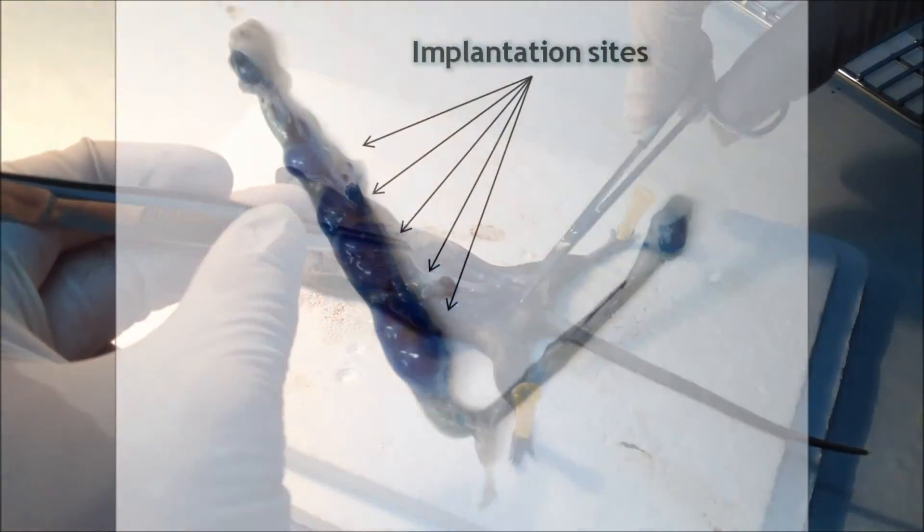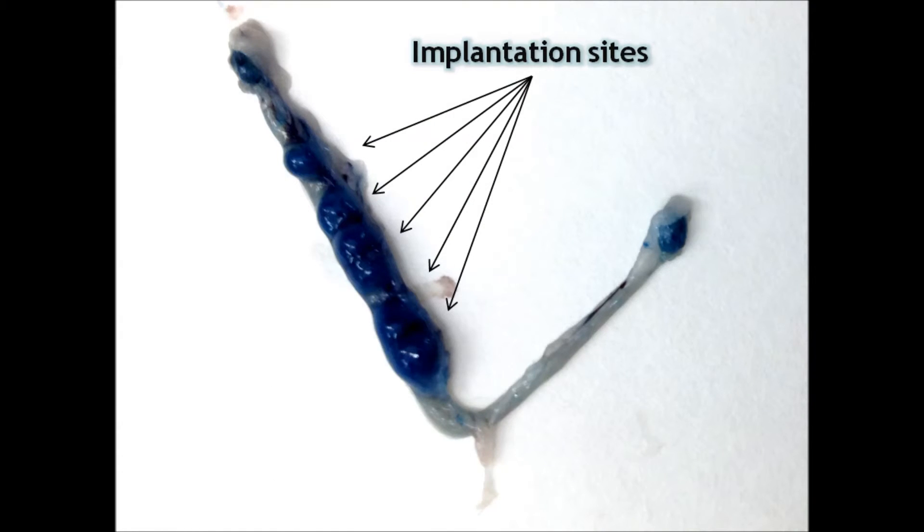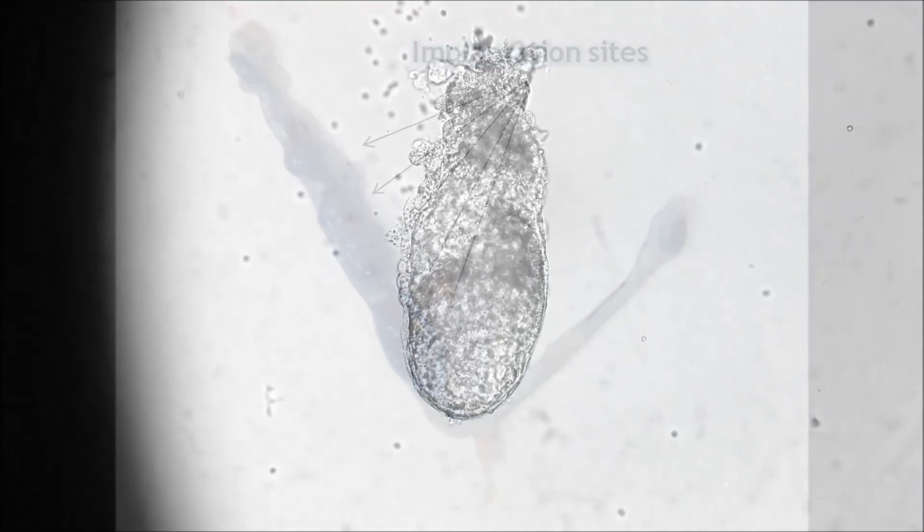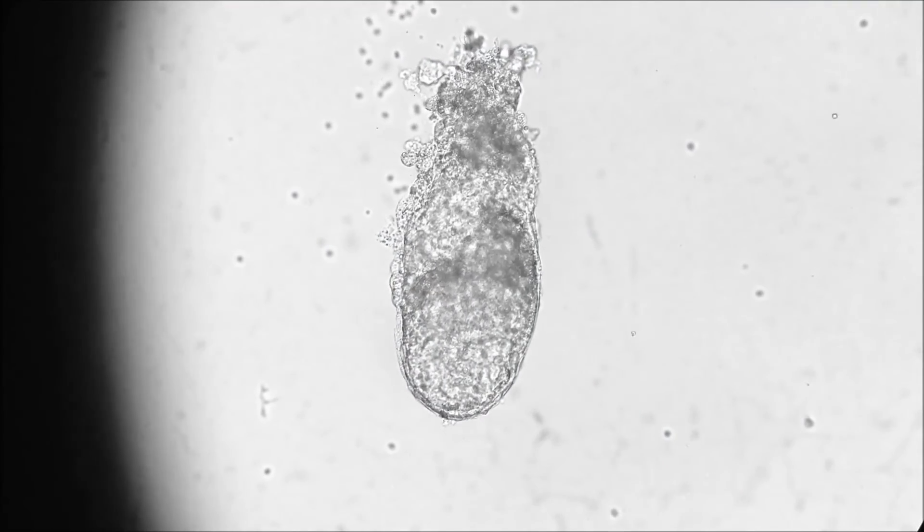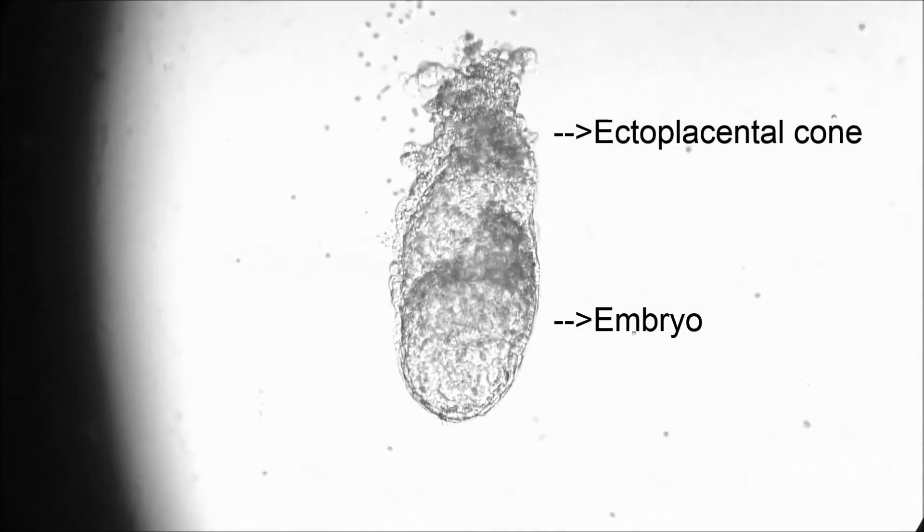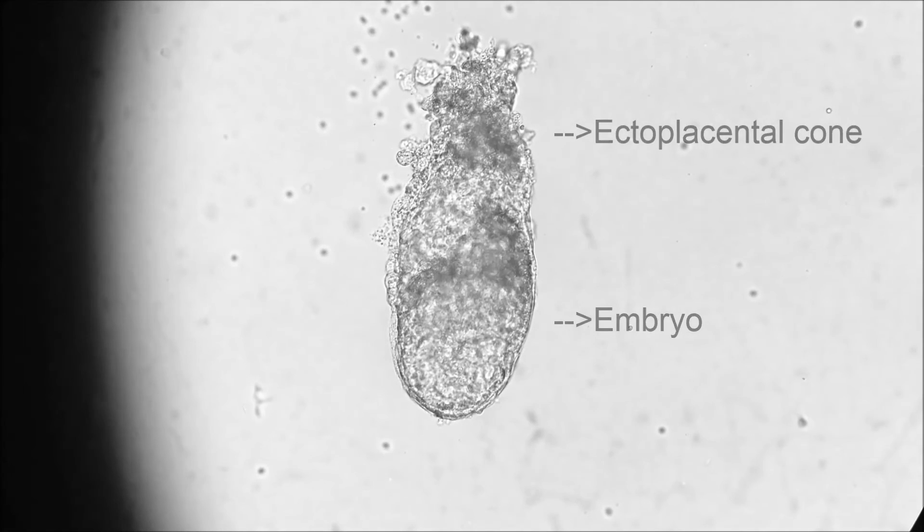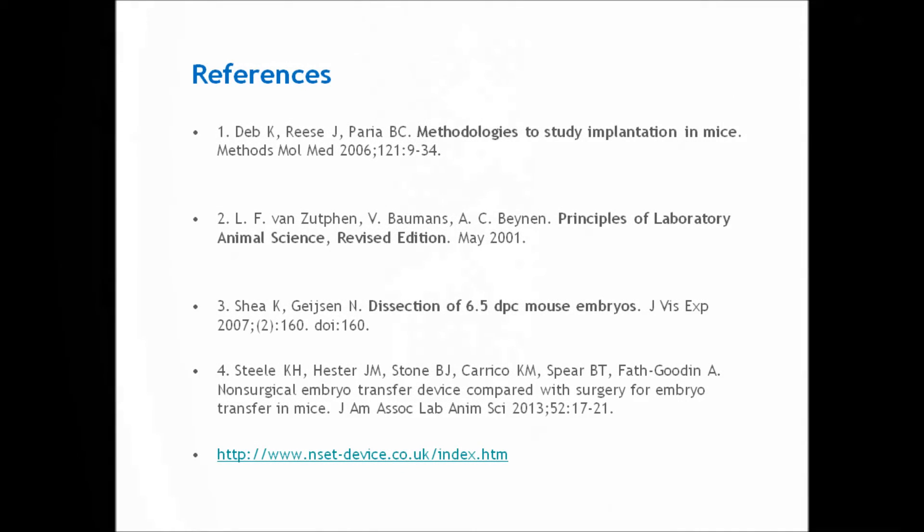Sacrifice the animals as previously described to see implantation sites. You can also individually dissect each one to observe embryos with their ectoplacental cone. If you need more information, the following material may be useful. Thanks for your attention.